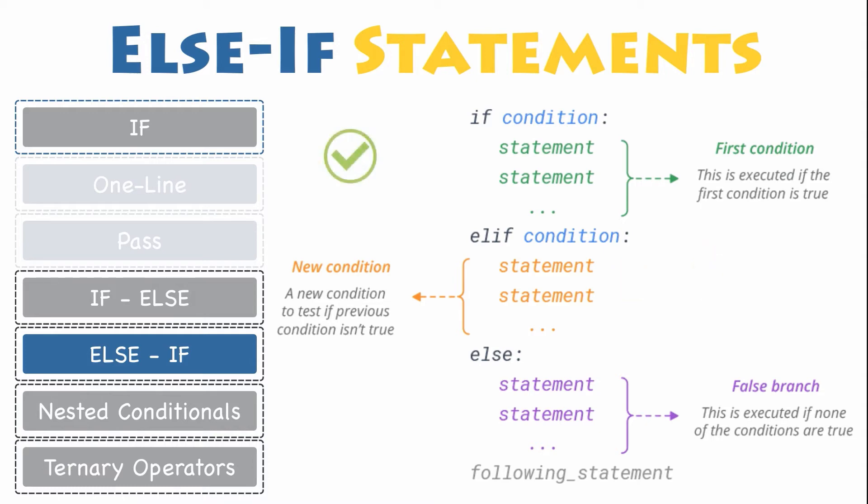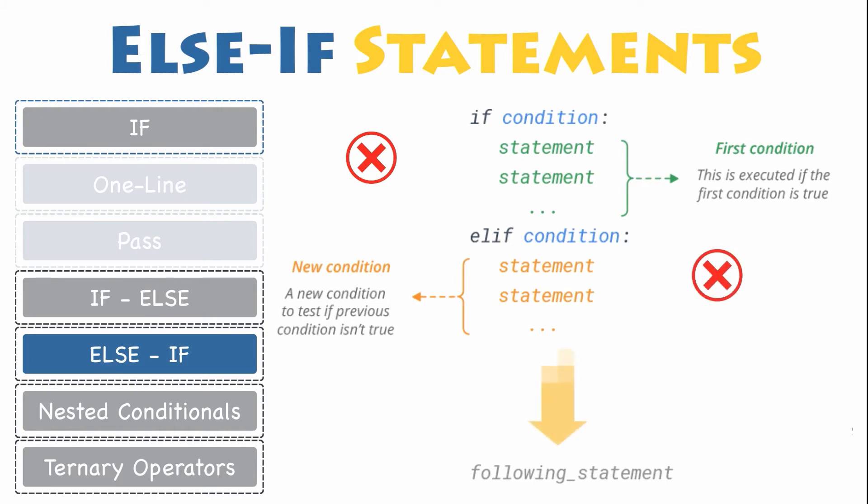Even if more than one condition is true in the following statements, only the first true branch will execute. There is no limit of the number of else if statements, but only a single and optional final else statement is allowed, and it must be the last branch in the statement. If an else clause is not included and all the conditions are false, then none of the blocks will be executed.